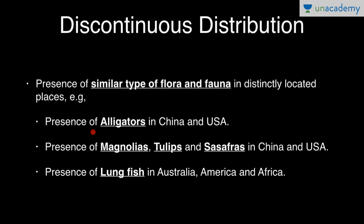For example, the presence of alligators in both China and the USA — two separate continents — represents similar fauna. Similarly, magnolias, tulips, and sassafras are present in both China and America, representing similar flora. Also, lungfish are found in three different continents — Australia, America, and Africa. All of these are examples of discontinuous distribution.